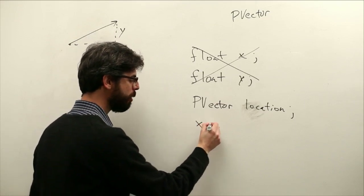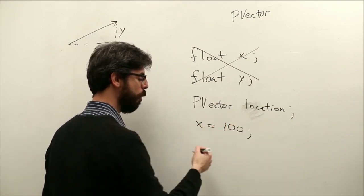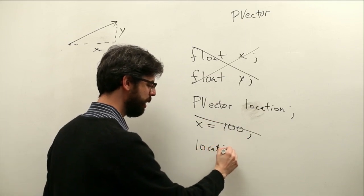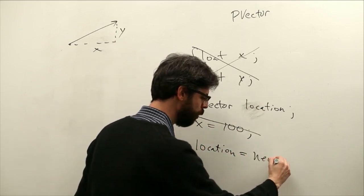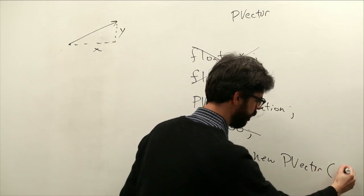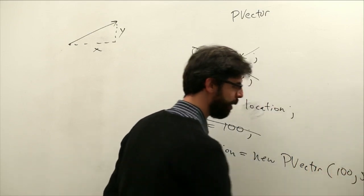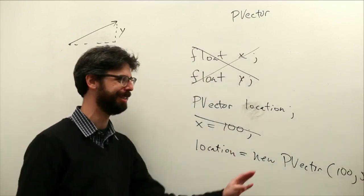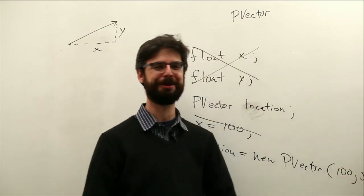Instead of having a separate x and y, we're going to say a PVector location. Now, when you have an x and a y, you might say x equals 100, y equals something. Instead, we're going to say location equals a new PVector, 100 comma 50, for example.